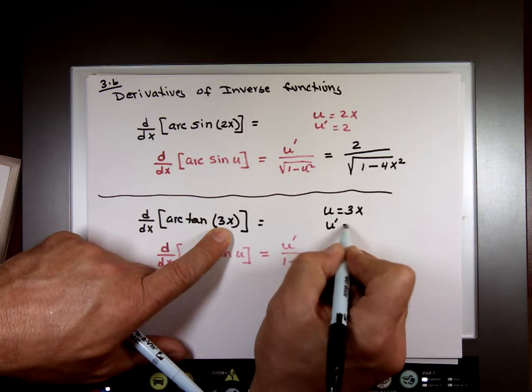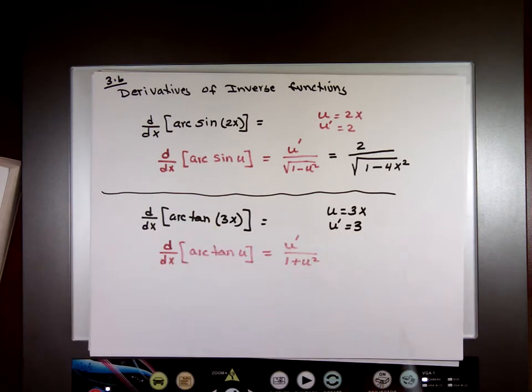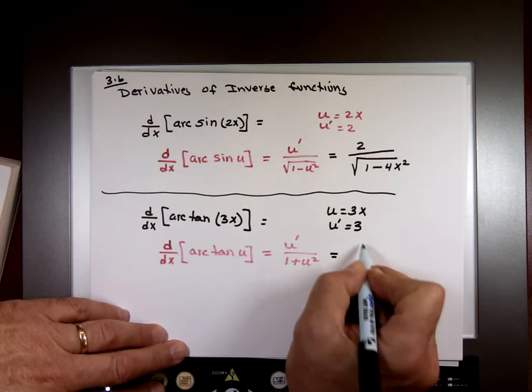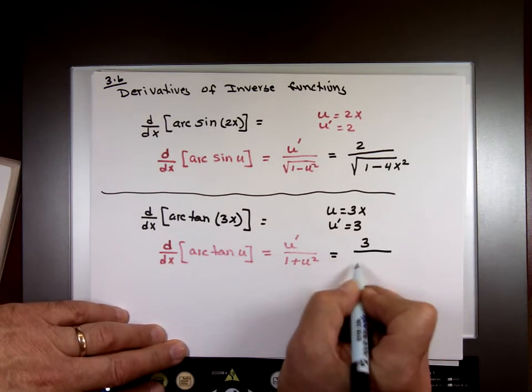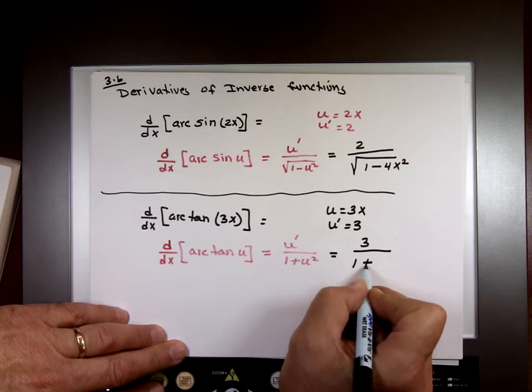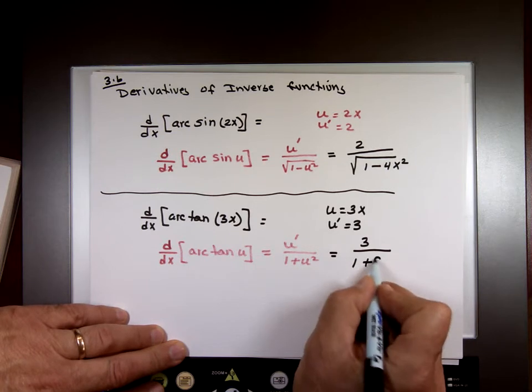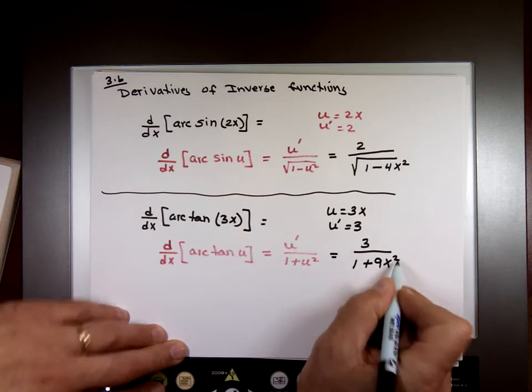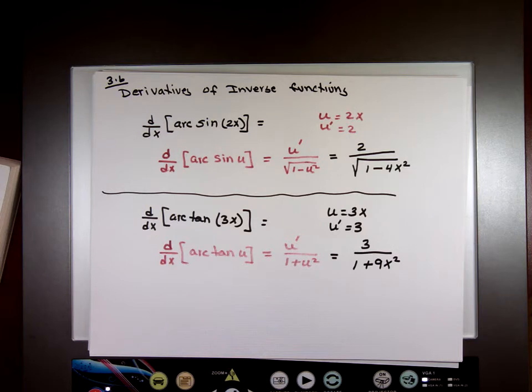That means u prime is going to be the derivative of that, which is 3. Fill in the blank. That will be 3 over 1 plus. What is 3x when you square it? 9x squared. Done.